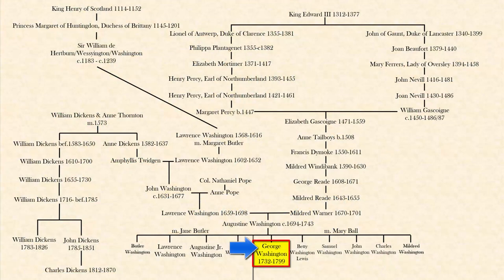Here's George. He was born in 1732 and he died in 1799. There are many ways that he is claimed to be related to royalty, and what I will show you is just one example.